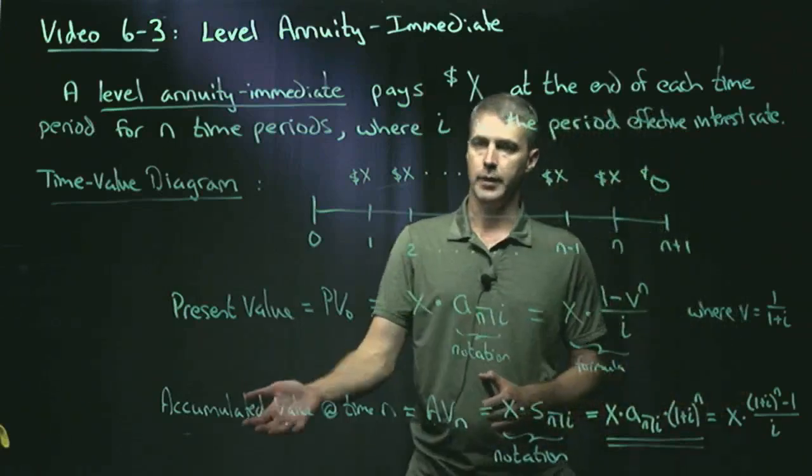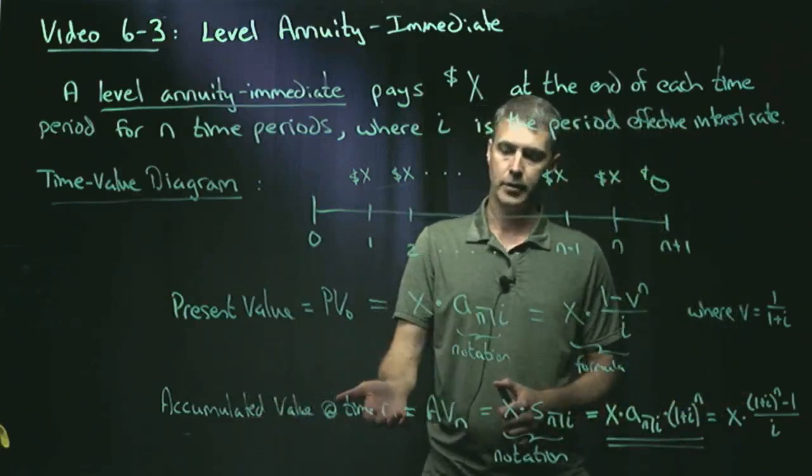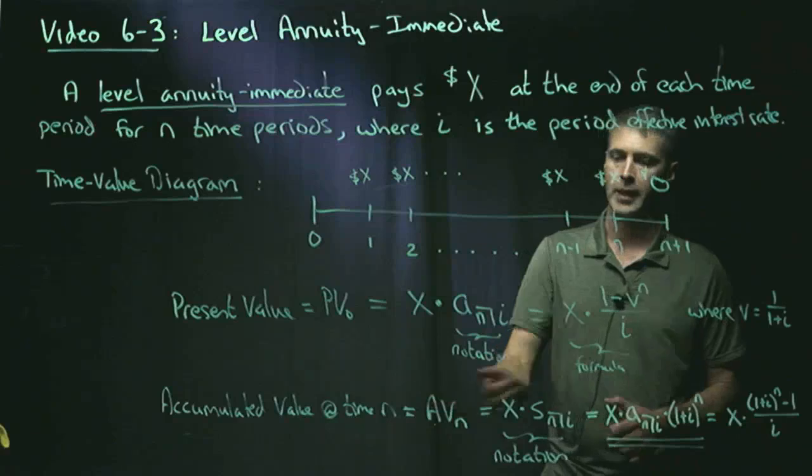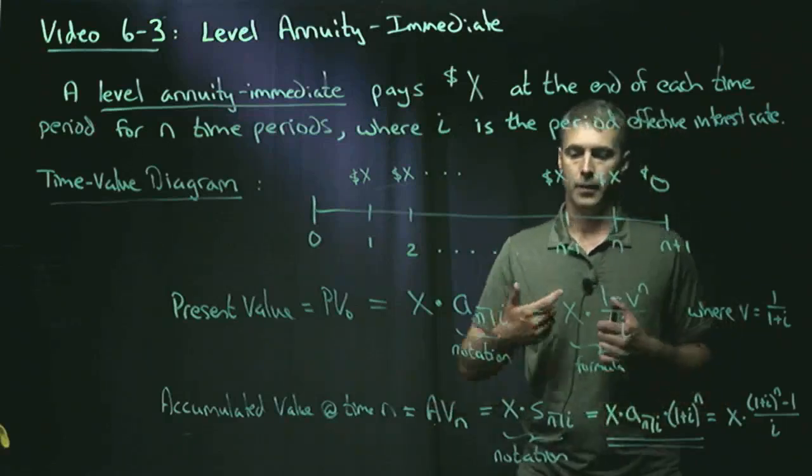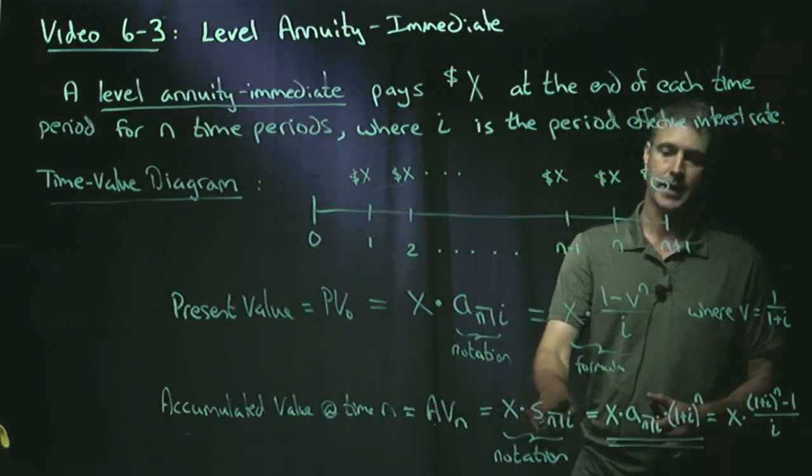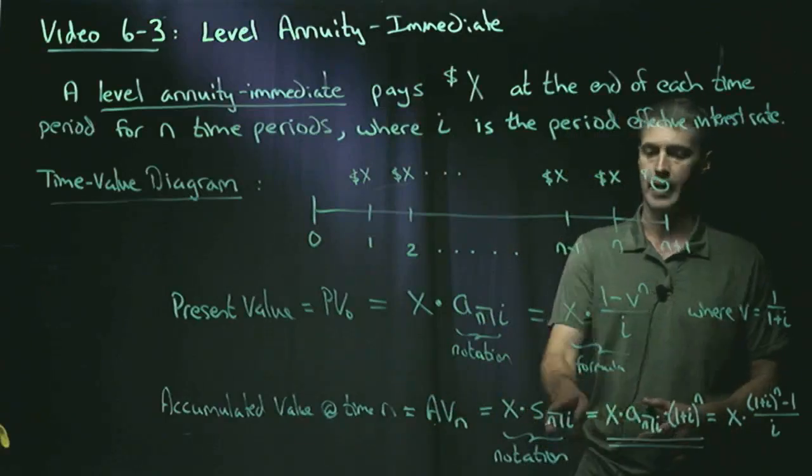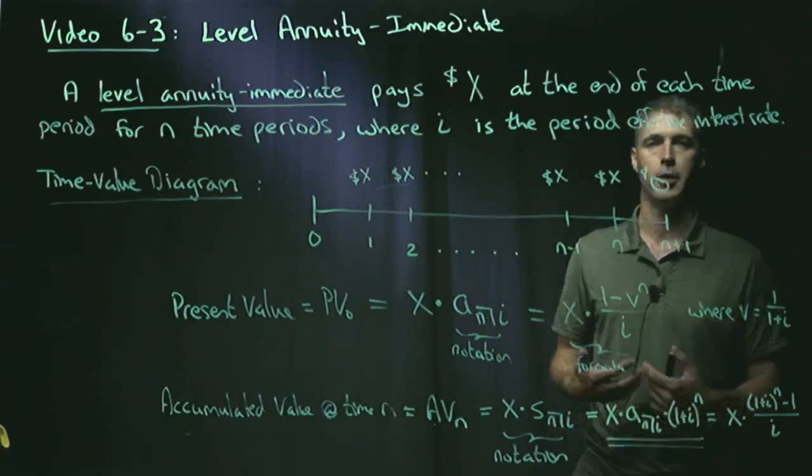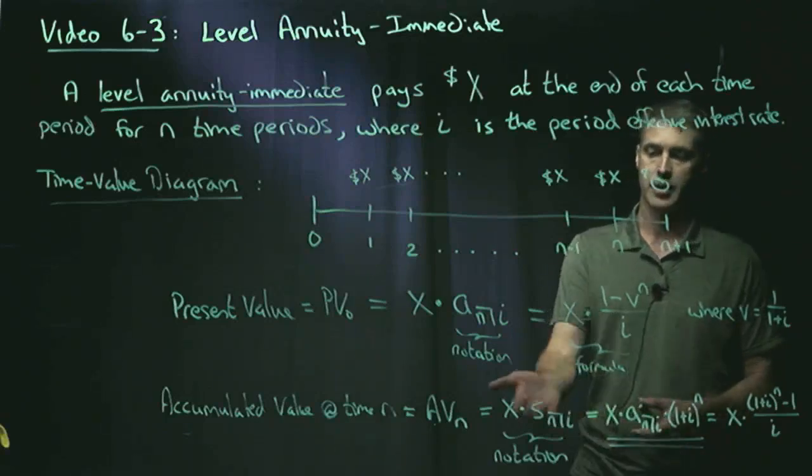If I want the accumulated value at time N, notationally AV sub N, the theory of interest notation for this is X, the payment size, times S angle N at I. So N for the number of payments, I for the period effective interest rate. So that is the notation.